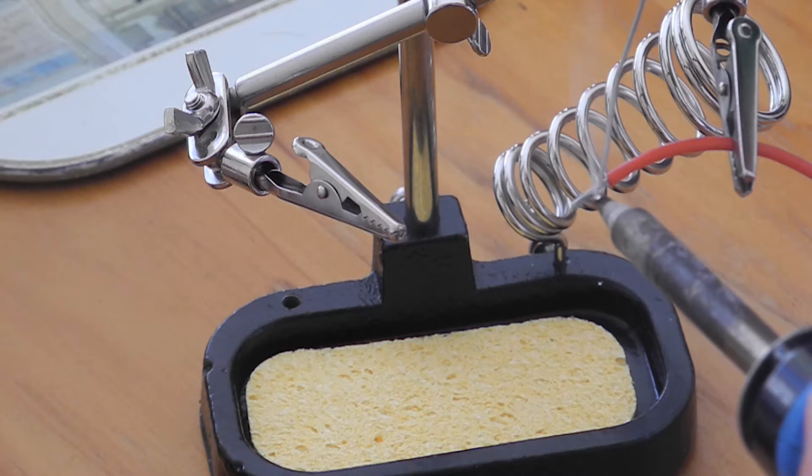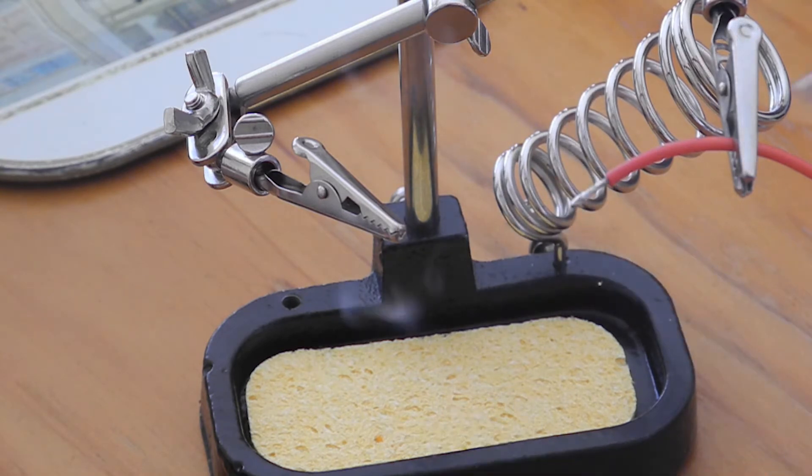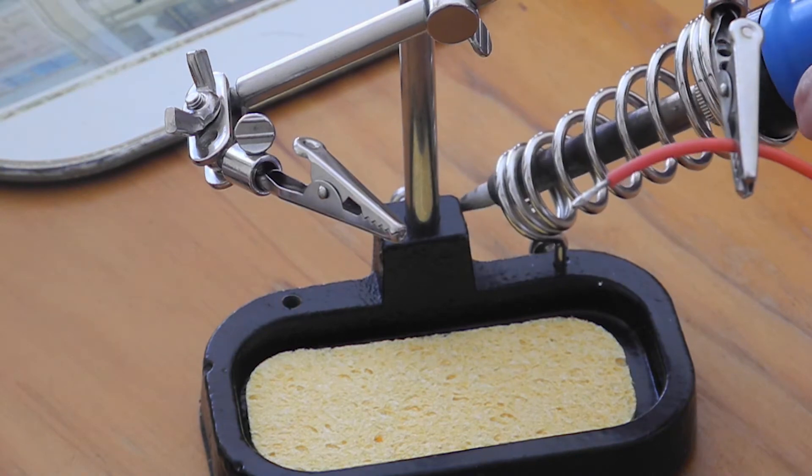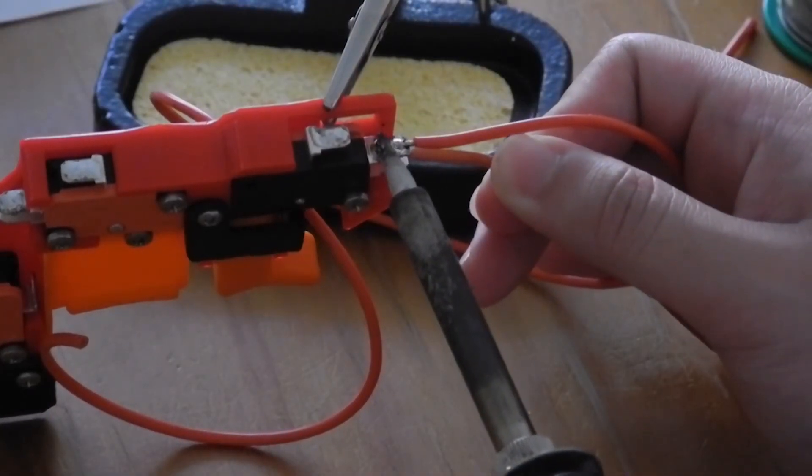We need to tin the wire as well. Place a dab of solder onto the iron and place the iron against the wire to heat it up and melt the solder onto the wire. Once tinned, simply remelt the solder and join the wires to their respective terminals.